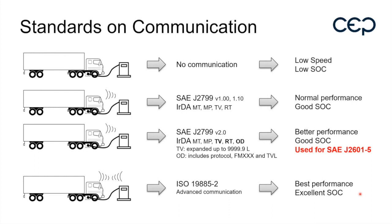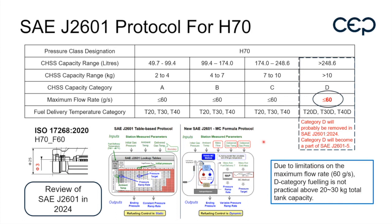Looking at the fueling protocol for light duty vehicles — J2601, which we all know well — there are categories A, B, C, and D. Category D was meant for heavy duty vehicles above 10 kg capacity. For fueling 10–15 kg it is quite good, but once you go to 25–30 kg or higher it is a very poor protocol because you are always limited to the flow rate of 60 grams per second.